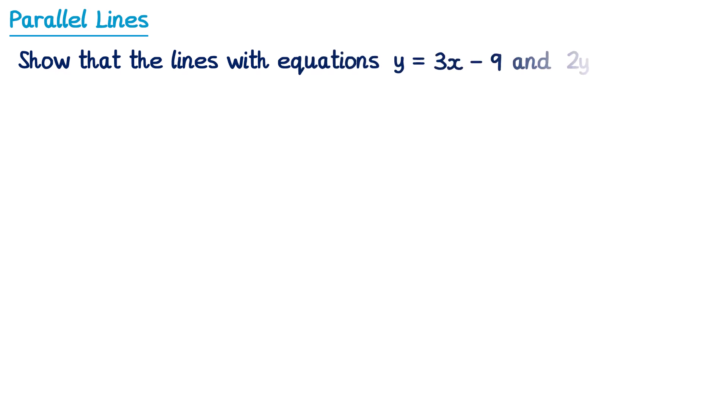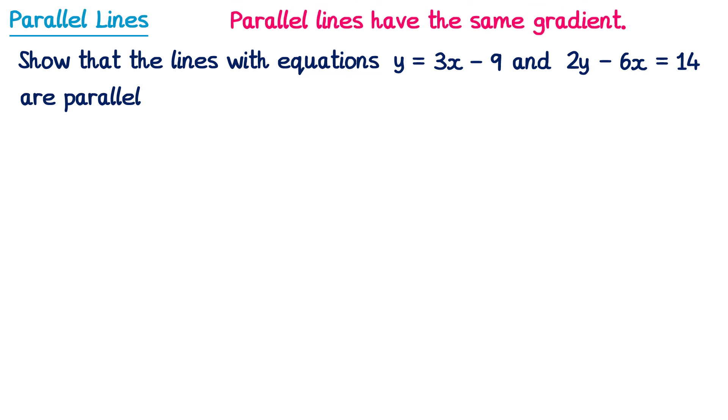An exam question could say: show that the lines of equations y equals 3x minus 9 and 2y minus 6x equals 14 are parallel. We just said that parallel lines have the same gradient, so if we're going to show that these two lines are parallel we just need to show they have the same gradient.